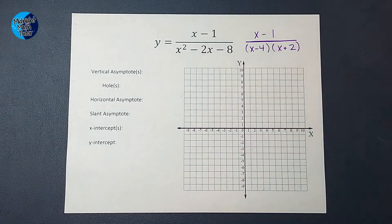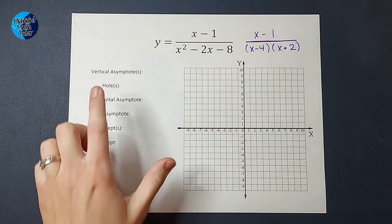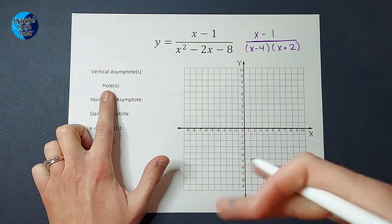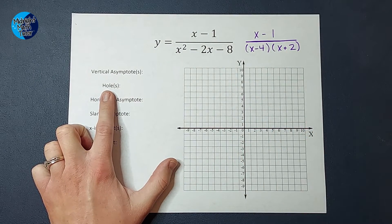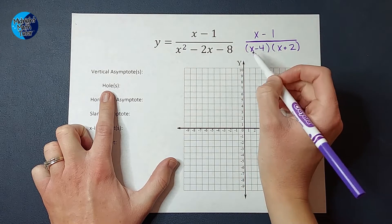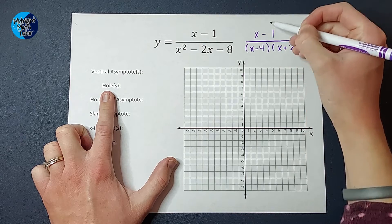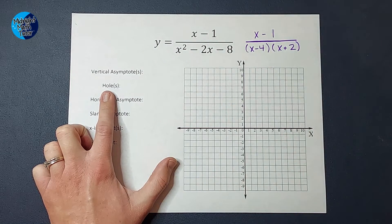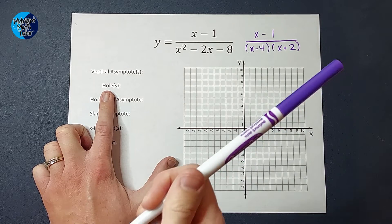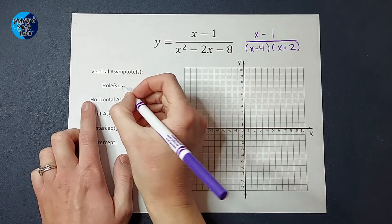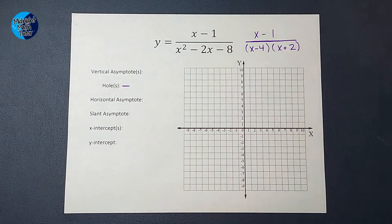Next I'm going to find my asymptotes and check for holes. A hole occurs when you have something in the top and the bottom that cancel. So pretend when I had factored this that it had been x minus 1 instead of 4 — then those two would cancel, and that's when you have a hole. In this example, we don't have any holes. I will link in the corner an example where we do have one.